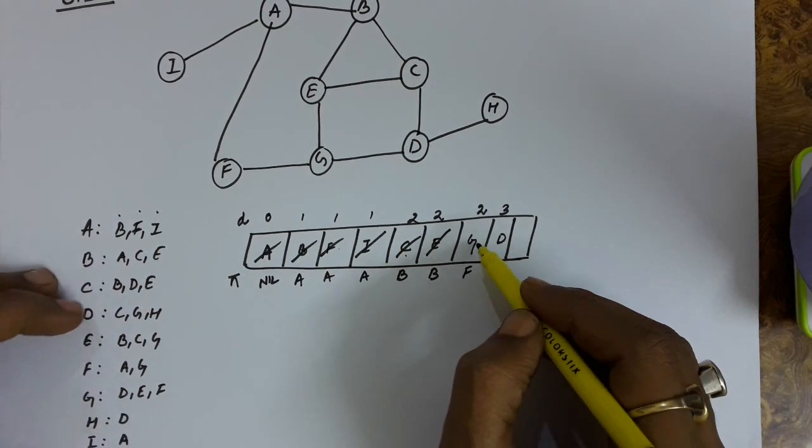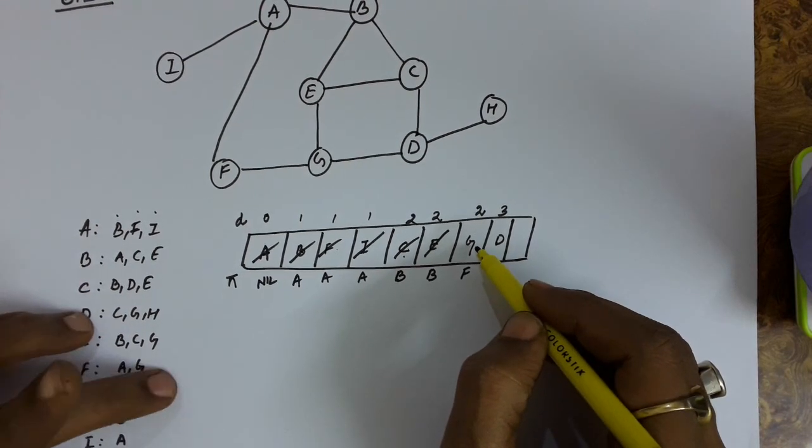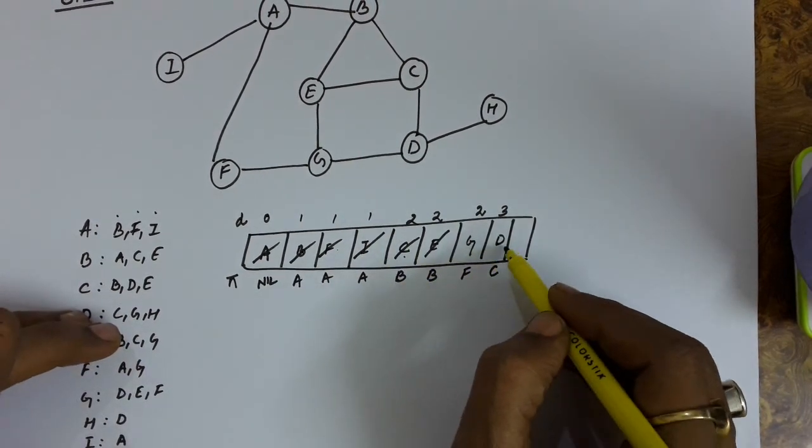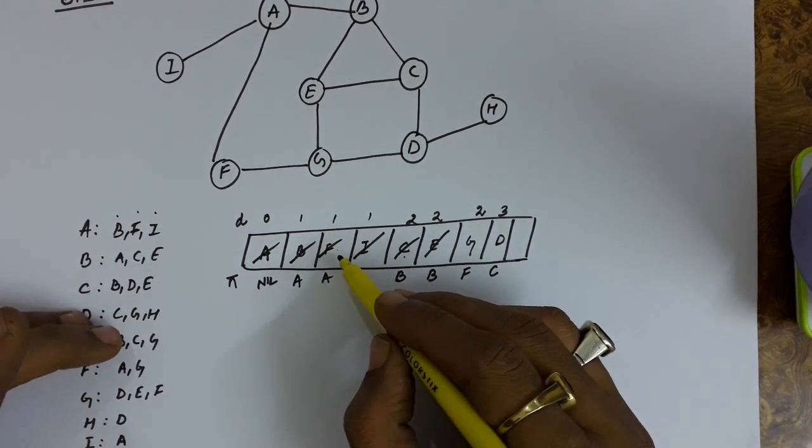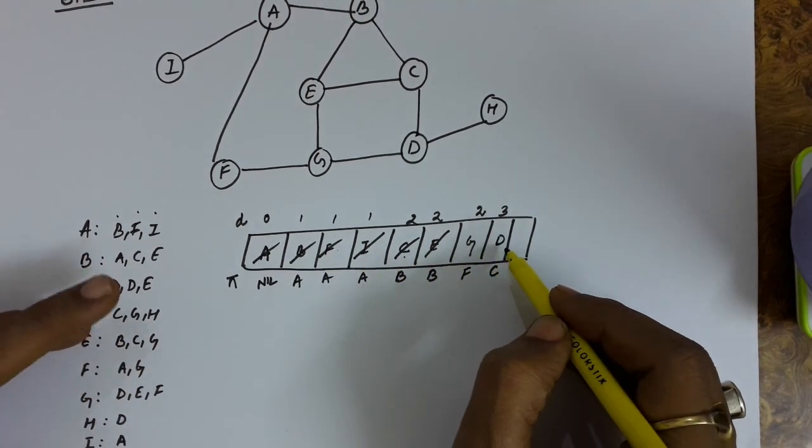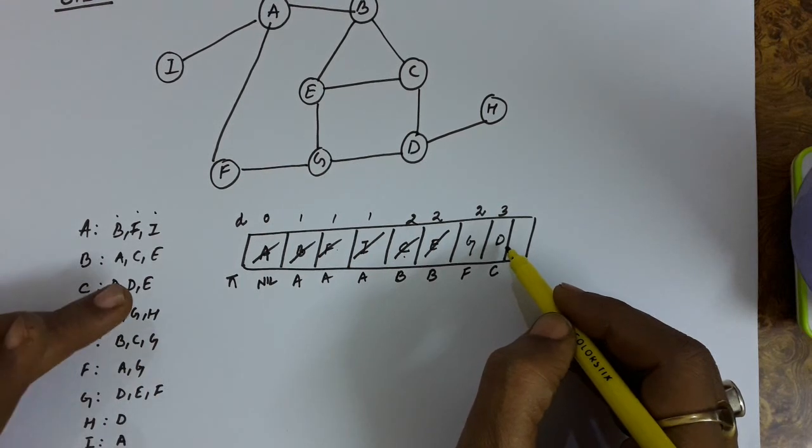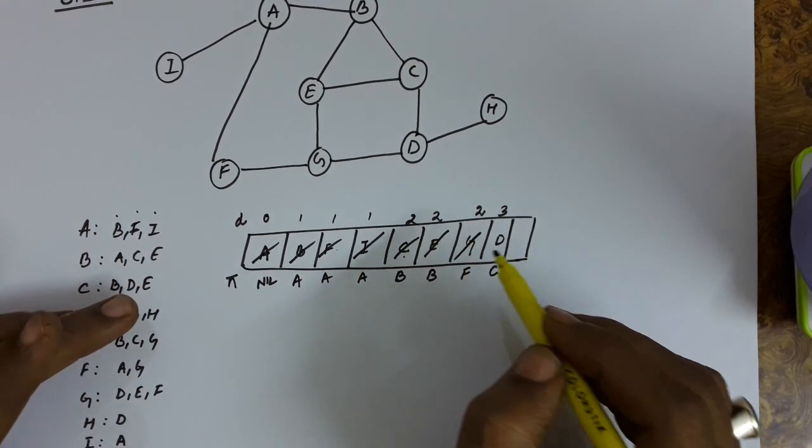Then G. Let us see the connections from G. These are D, E, F. Either they are in the queue or they are in the queue sometime. So it will not be inserted again. So remove this G.